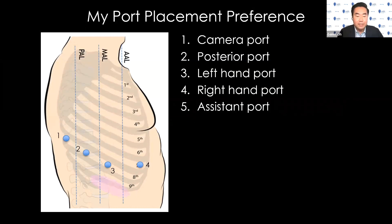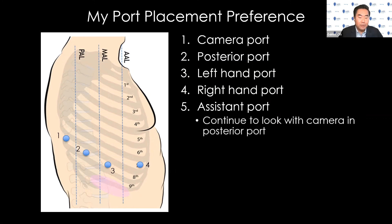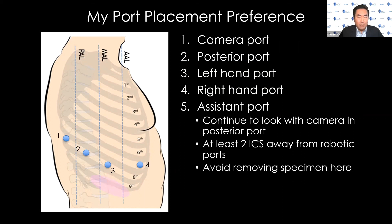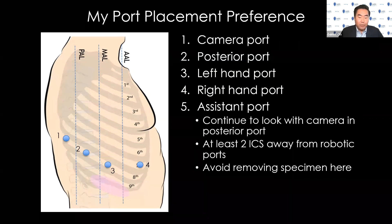Finally, I place the assistant port with the camera pointing posteriorly looking towards the front. I typically go at least two intercostal spaces away from the robotic ports. Most of the time, my assistant port is vertically in line with the camera port. We avoid removing the specimen through this port.